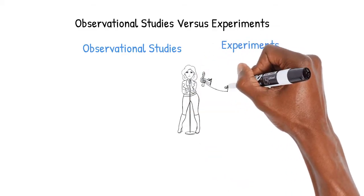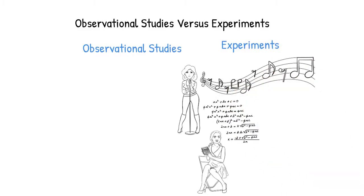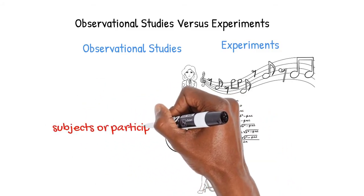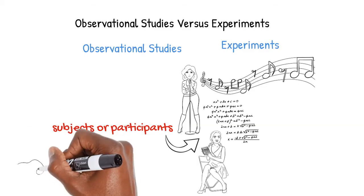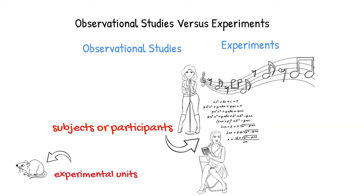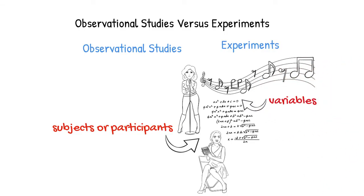Let's say we've heard that people who sing have a tendency to be better at math. We can do a statistical study to see if these two things are, in fact, related. The people that we choose to examine are called the subjects or participants. If there is a non-human subject, we can also call it an experimental unit. Variables are the what of our study. Since we are looking at whether singing affects math skills, these are our variables.